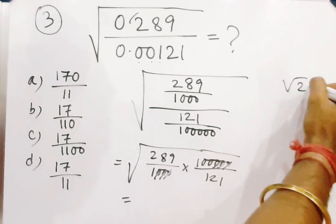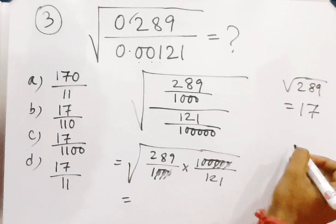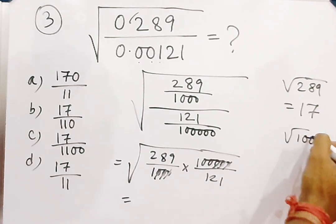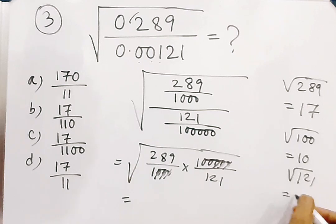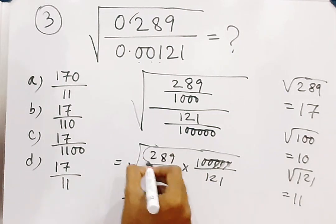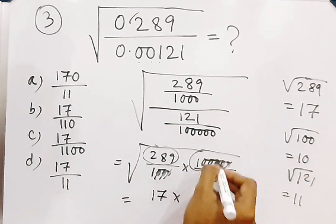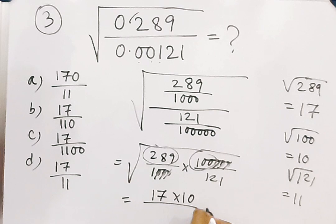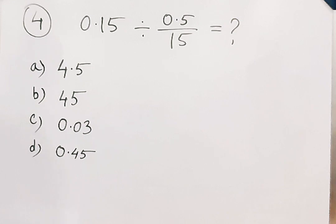We know that root 289 equals 17, root 100 equals 10, and root 121 equals 11. So after taking the square root, the numerator gives 17 × 10 = 170, and the denominator gives 11. Therefore the answer is 170 by 11.